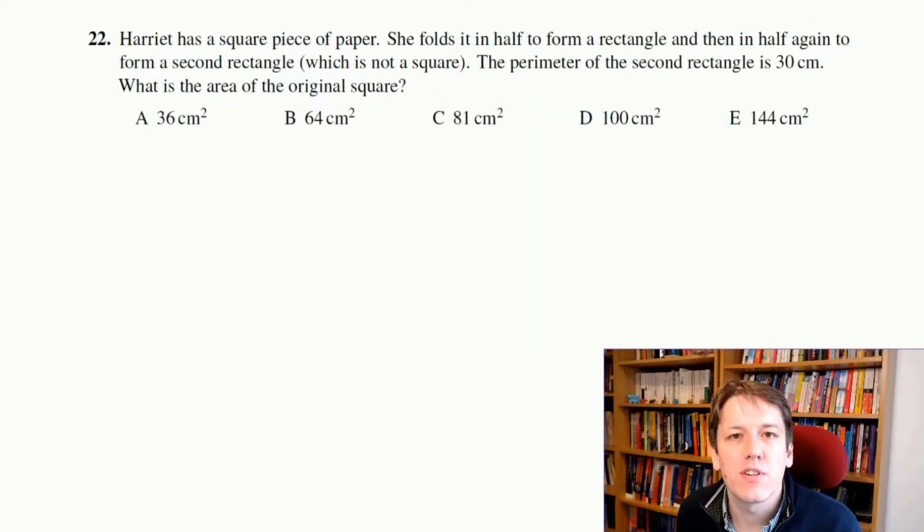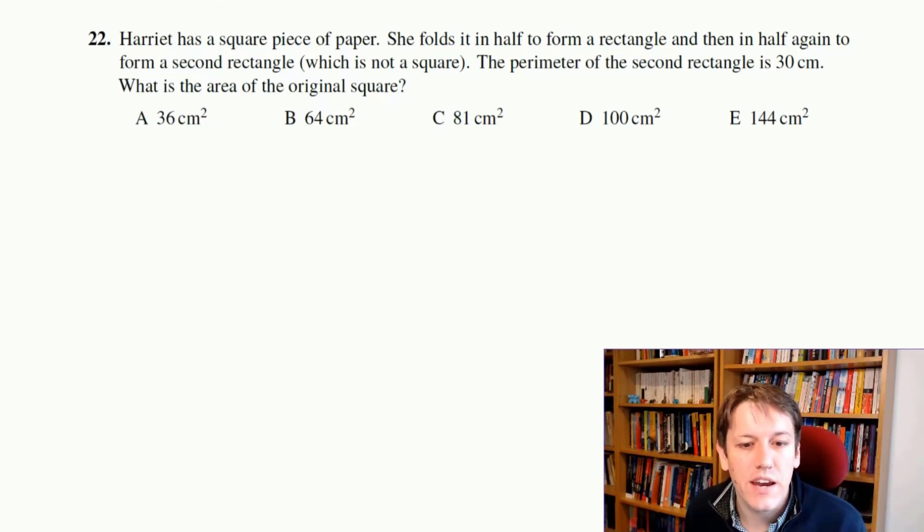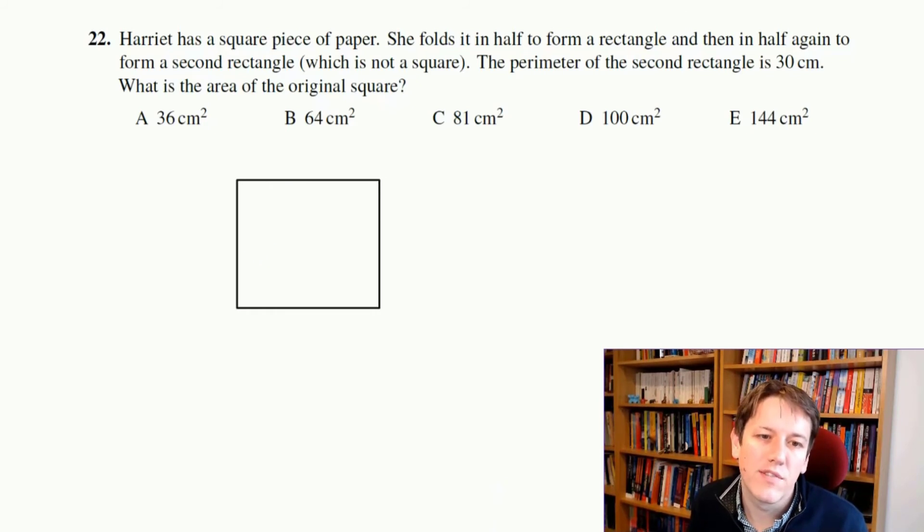Harriet has a square piece of paper. She folds it in half to form a rectangle, and then in half again to form a second rectangle, which is not a square. So the perimeter of the second rectangle is 30, what's the area of the original square? Okay, so this thing about it not being a square is really important here, right? So imagine you fold this square in half.